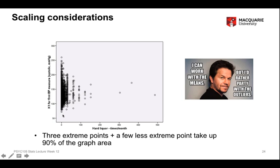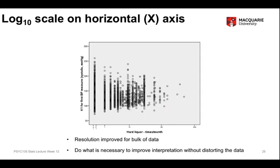One way of getting around this, which does not create the exaggeration problem of the previous graph, is to change the way the scale is scaled. In this case, I've used a logarithmic scale where the dot points indicate an order of magnitude — so 0.01, 0.1, 1, 10, 100, and so on.